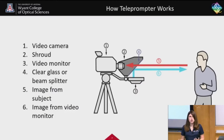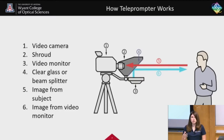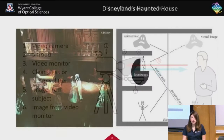Other teleprompters, like on TV or for news anchors, use reflective glass that's actually on the camera. The words are displayed onto this reflective glass. It's important to note that the words actually have to be displayed backwards because once they interact with the glass, the words are going to flip over — and once the words flip over, it's the correct way for the news anchor or TV star to read them.